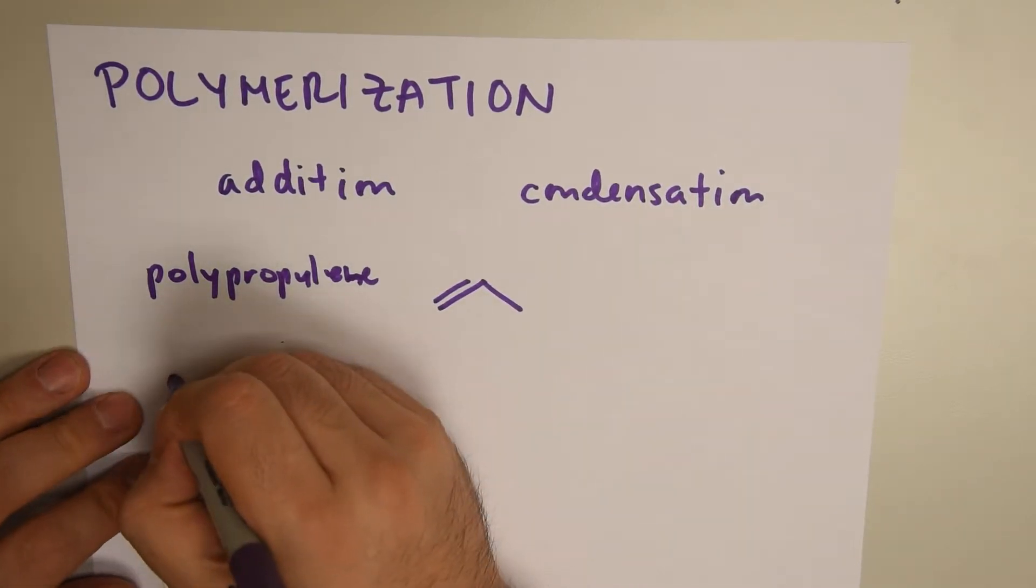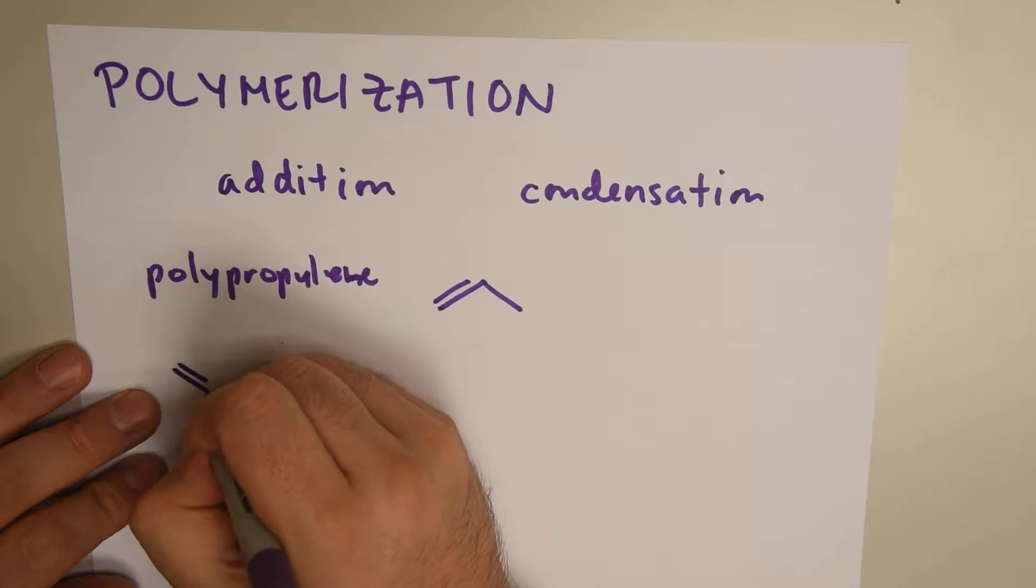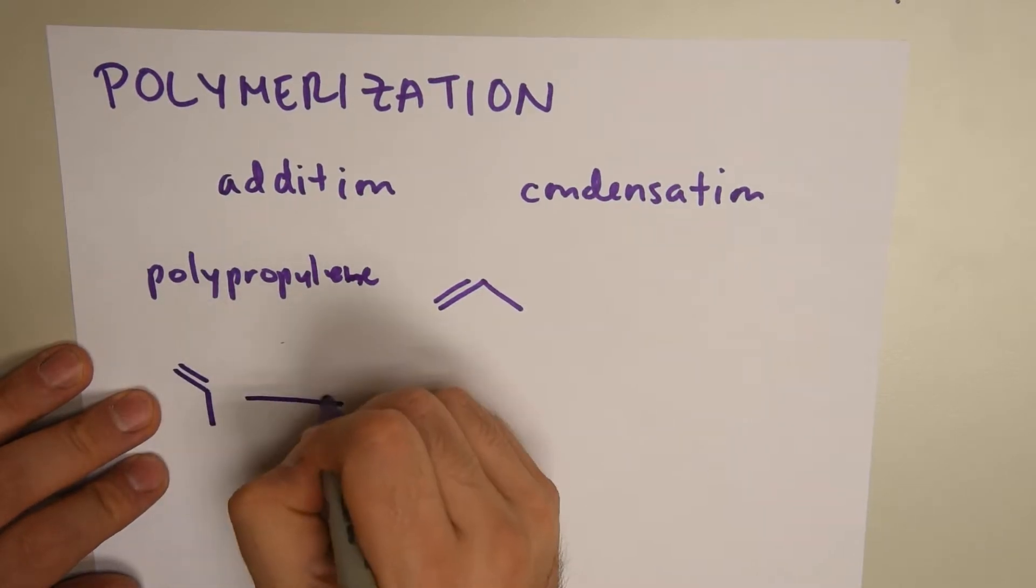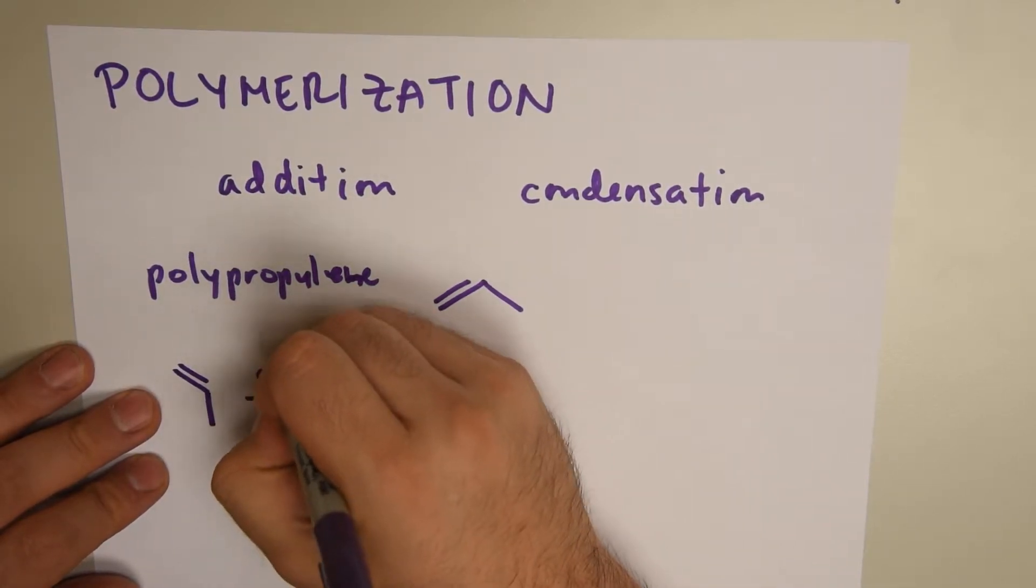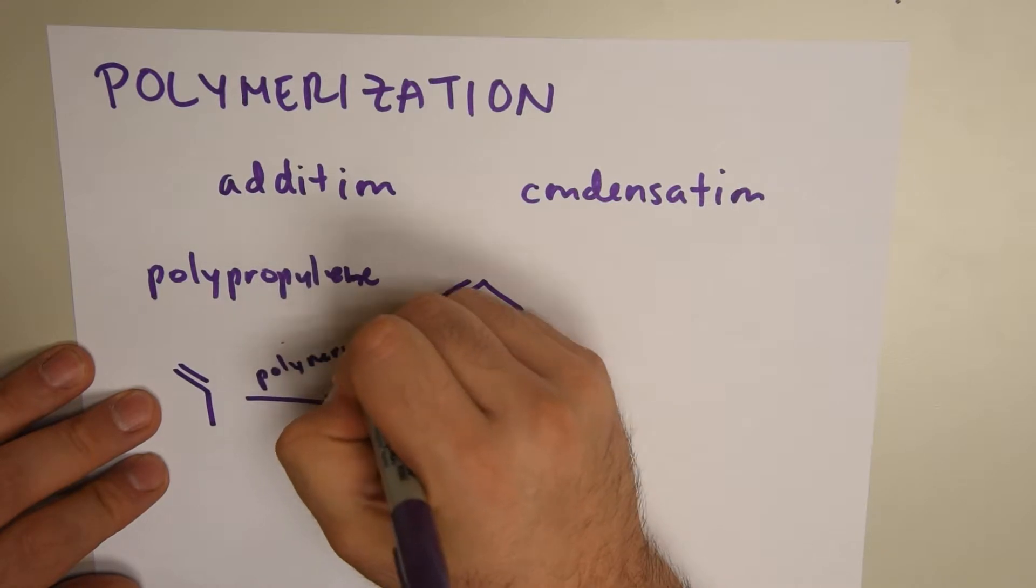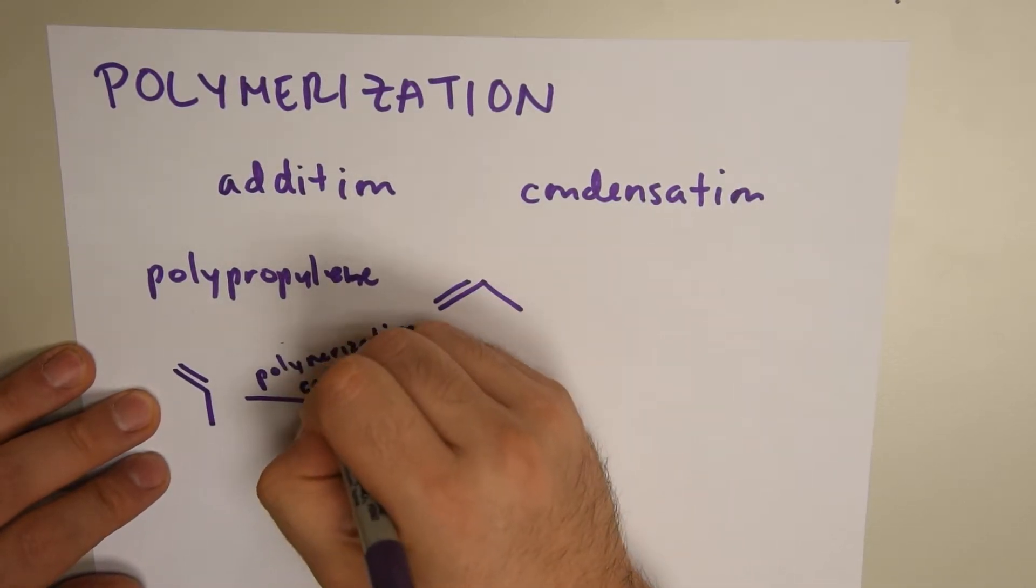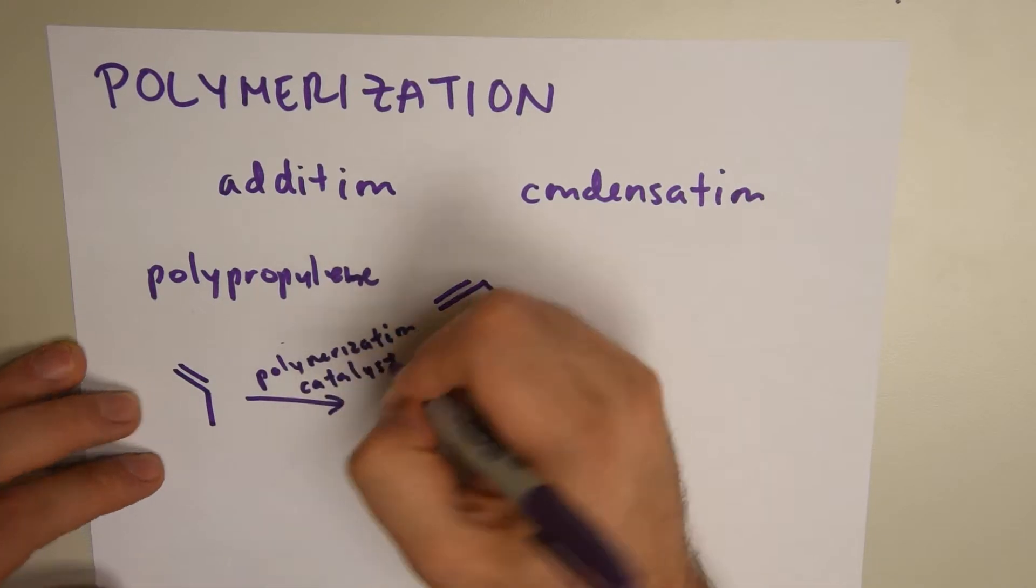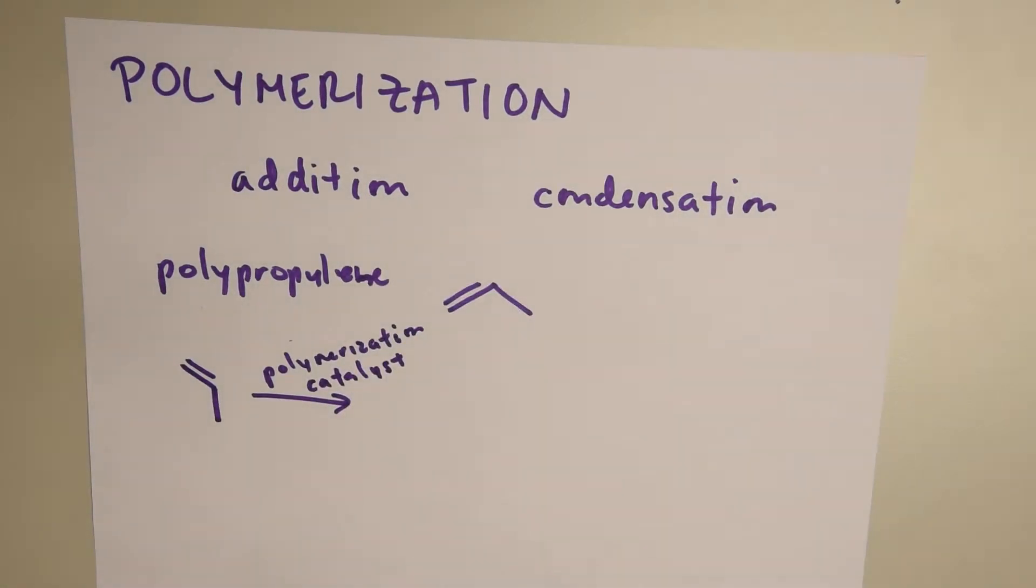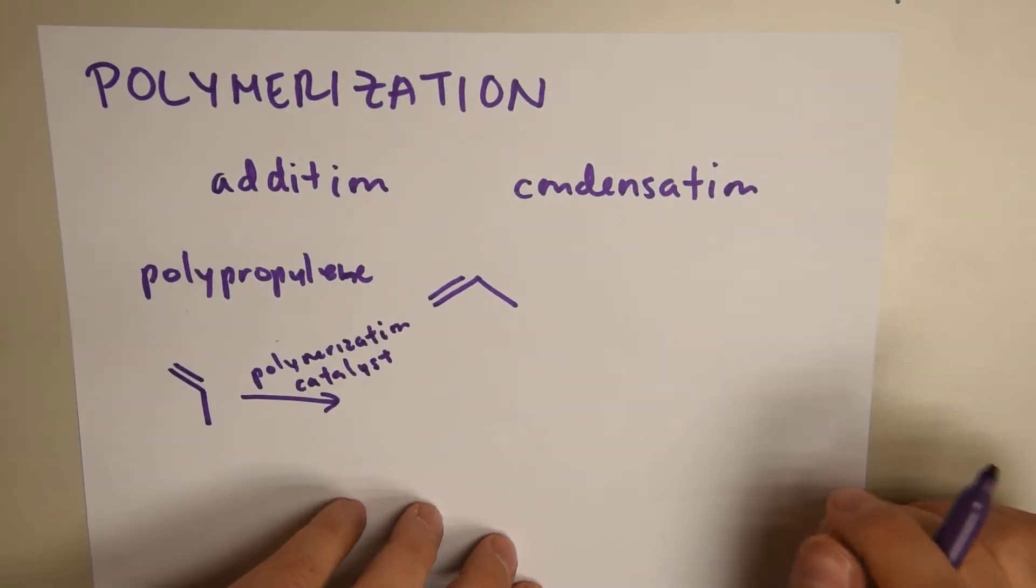is we take the propylene, we write it like this, then we write a little line, and it depends on your teacher. You write polymerization, or UV rays, or catalyst, whatever. And what we want to do is we want to show the repetition of how these molecules join together.